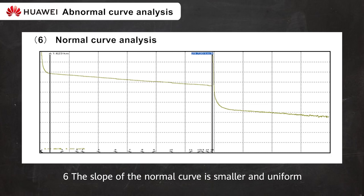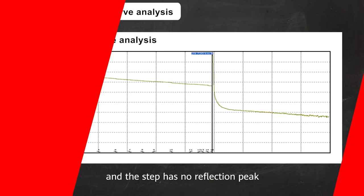6. The slope of the normal curve is smaller and uniform. The curve is straight. No abnormality exists. The splicing point is not large and the step has no reflection peak.